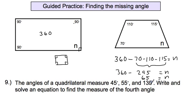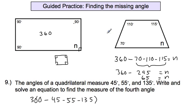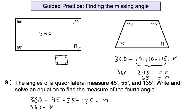What if the question doesn't show a shape and just gives you numbers? We apply the same approach: 360 minus the three angles you know — minus 45, minus 55, minus 135 — equals your fourth angle n. Adding the known angles: 45 + 55 = 100, + 135 = 235. Then 360 − 235 = n, which equals 125. So n equals 125. You won't be able to do that in your head, so just work it out on paper.